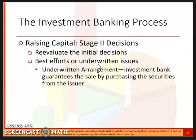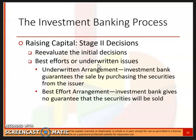Stage two involves the decision between best efforts or underwritten arrangements. An underwritten agreement — also referred to as a firm commitment — means the investment bank guarantees the sale by purchasing the securities from the issuer and then reselling them at their own risk. A best efforts arrangement means the investment bank does not guarantee that the securities will be sold.